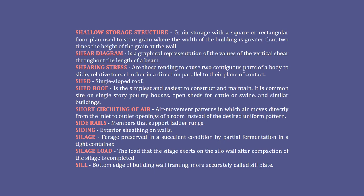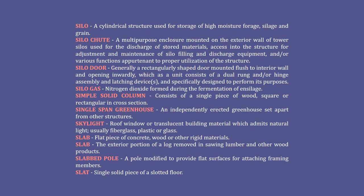Silage load: the load that the silage exerts on the silo wall after compaction of the silage is completed. Sill: bottom edge of building wall framing, more accurately called sill plate. Silo: a cylindrical structure used for storage of high moisture forage, silage, and grain. Silo shoot: a multipurpose enclosure mounted on the exterior wall of tower silos, used for the discharge of stored materials, access into the structure for adjustment and maintenance of silo filling and discharge equipment, and various functions pertaining to proper utilization of the structure.